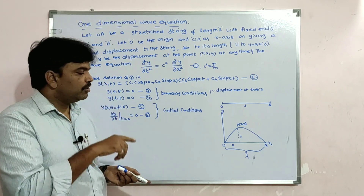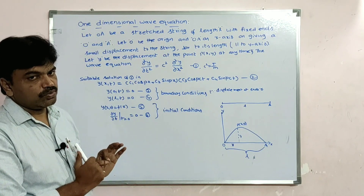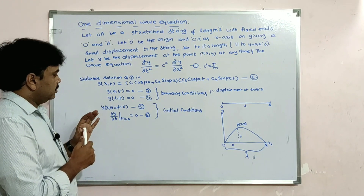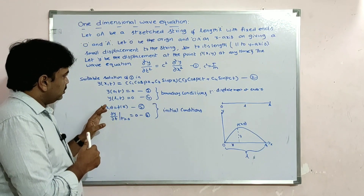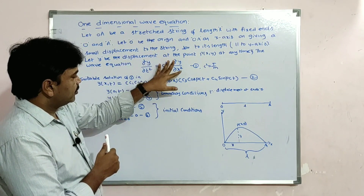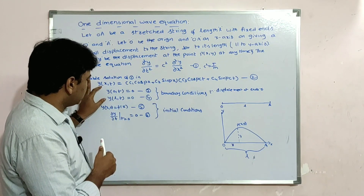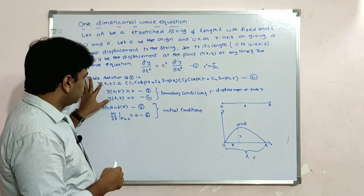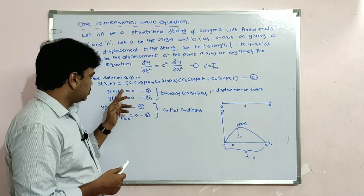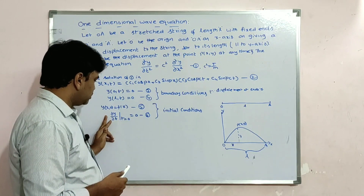The initial velocity is zero. So to summarize: the wave equation is ∂²y/∂t² = c² · ∂²y/∂x², the solution is as given, the boundary conditions are y(0, t) = 0 and y(L, t) = 0, and the initial velocity is zero.